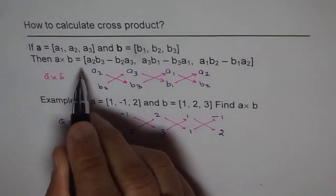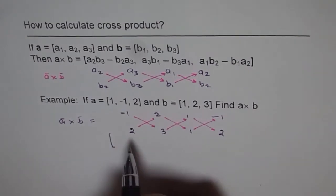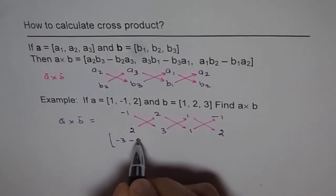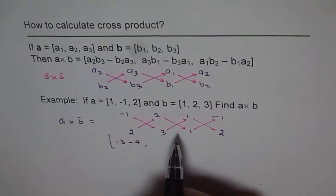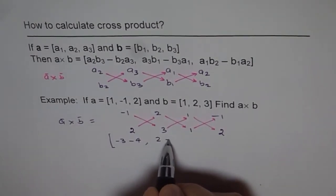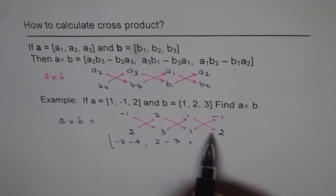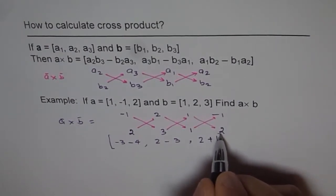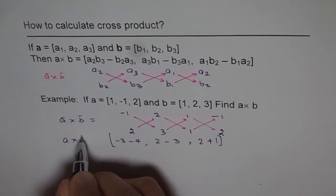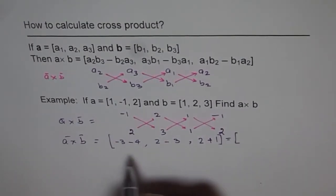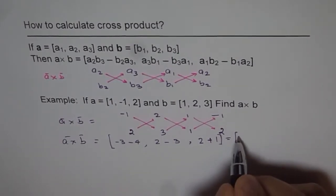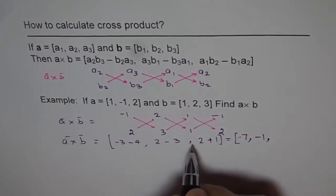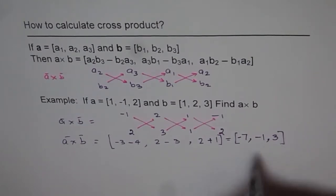Let's write the answer in vector form. The first direction number: this times this is minus 3, take away 4 — that gives the first component. The next one: 2 minus 3. Then 2 minus of minus 1, which makes it plus 1. So: minus 3 minus 4 gives minus 7; 2 minus 3 gives minus 1; and 2 plus 1 gives 3. Our cross product vector is (−7, −1, 3).